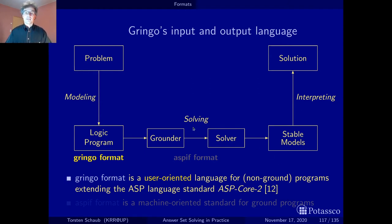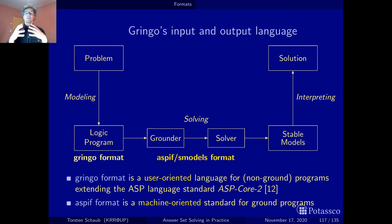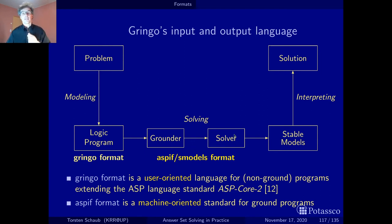I also want to look at the intermediate language — the format in which ground programs are passed from the grounder to the solver. This is called the ASPIF format. I also want to look at the traditional, much older Smodels format, because the Smodels format contains the primitive constructs of the language we have already seen — choice rules, cardinality rules, weight rules — giving a nice link between these formats and what we discussed in section one. The grounder Gringo and the solver Clasp can talk to each other in both of these formats, but by default we use the ASPIF format.